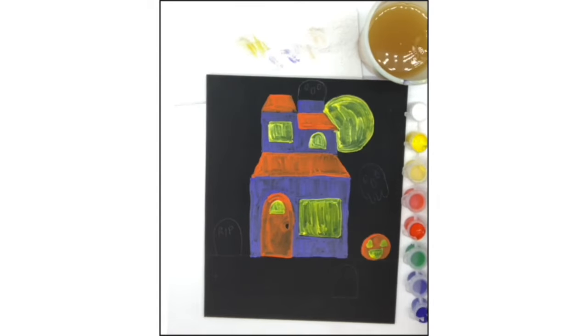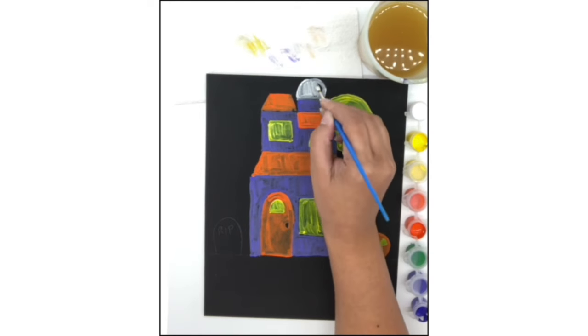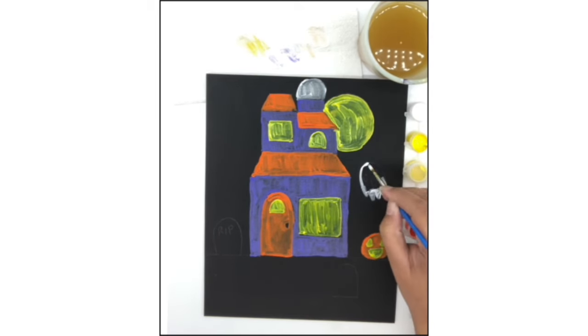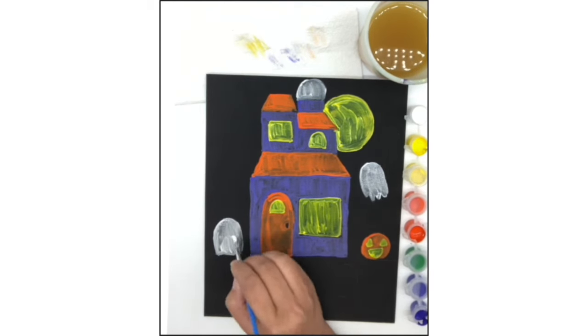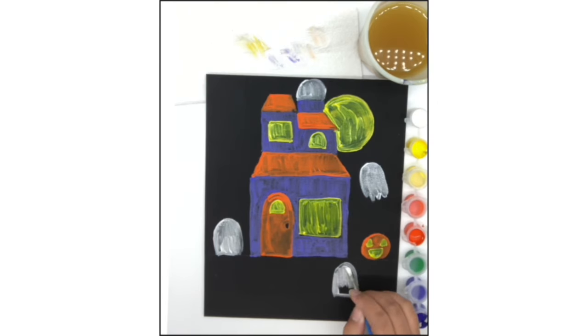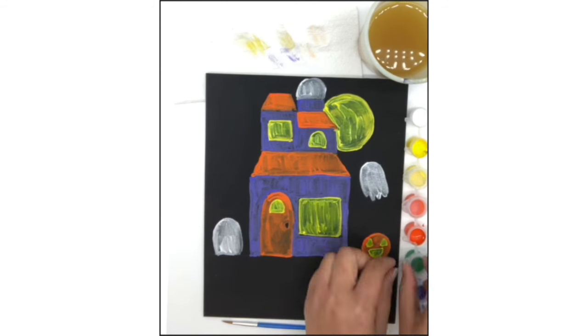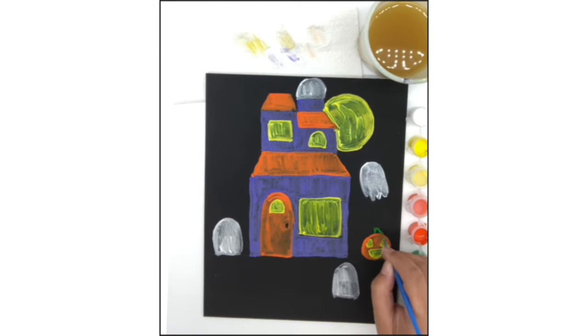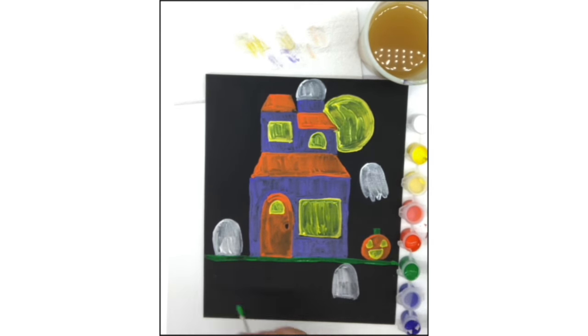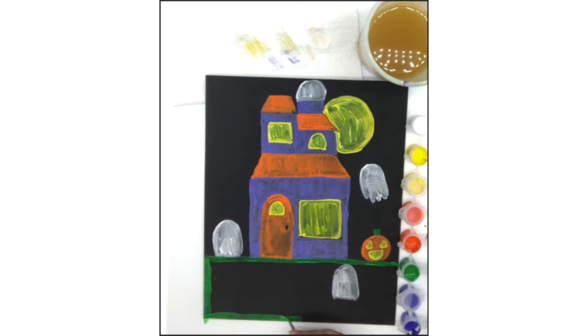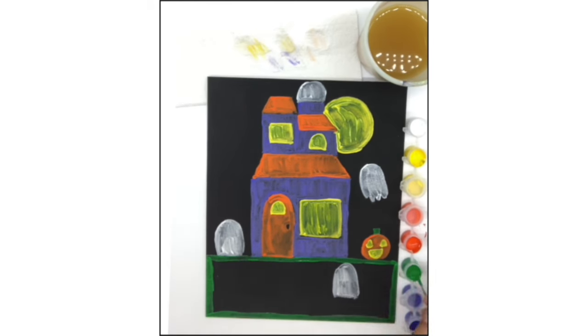Then you can use white for your ghosts and your tombstones. Paint the grass green by using short vertical strokes to imitate the texture in real life. Don't forget the stem of the pumpkin either.